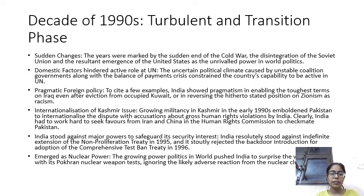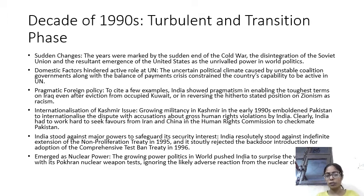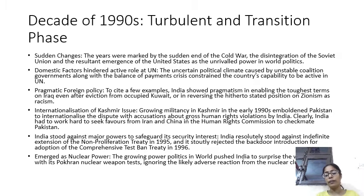India started bringing its practical approach to foreign policy to the UN. But then came the internationalization of the Kashmir issue, with Pakistan trying to involve major powers. On security interests, India refused to sign both the Non-Proliferation Treaty (NPT) and the Comprehensive Test Ban Treaty (CTBT) — the CTBT basically banning nuclear tests — and India has not signed either of those treaties to this day.